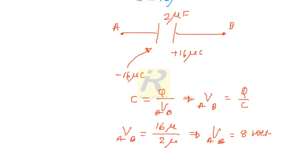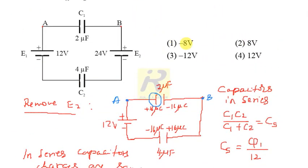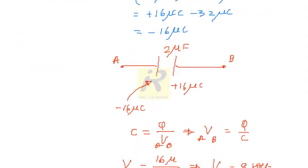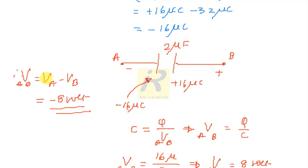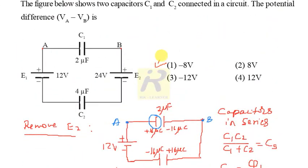To determine the sign: the plate at terminal A has −16 microcoulombs, so terminal A is negative, and terminal B is positive. Therefore VA < VB, which means VA − VB is negative. So the potential difference VAB = VA − VB = −8 volts. With respect to B, A is at lower potential — the answer is minus 8 volt.